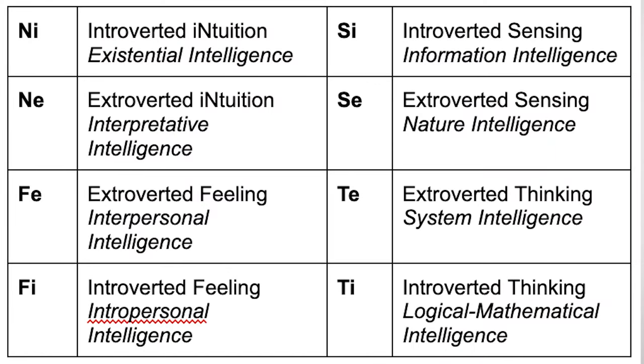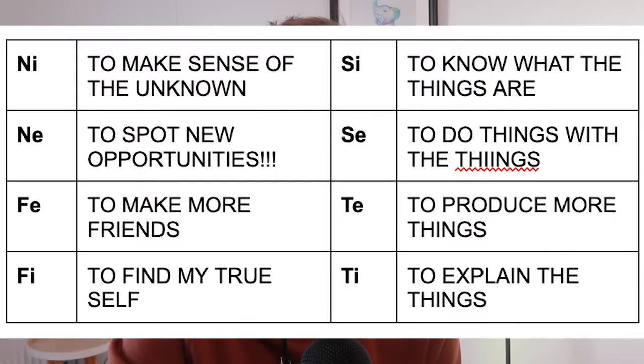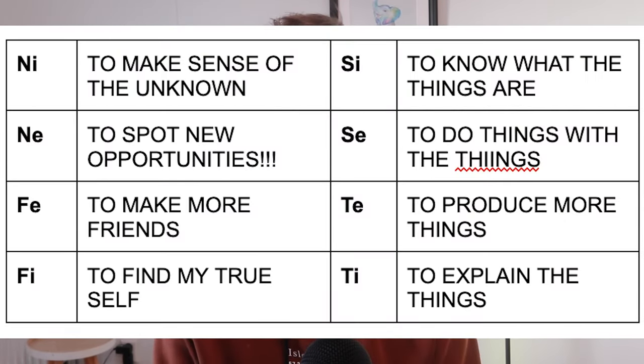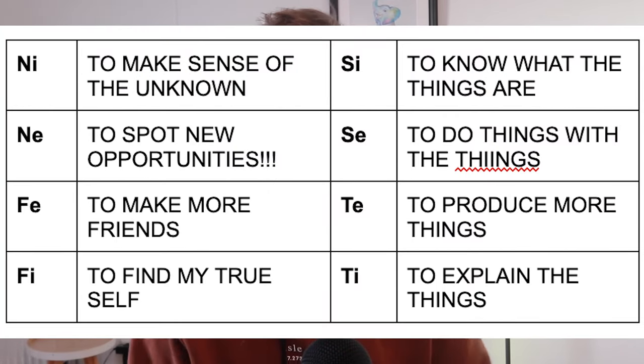You'll figure those out pretty fast because they have a pretty logical structure to them. The functions in caps: NI is to make sense of the unknown. NE is to spot new opportunities. FE is to make more friends. FI is to find my true self and what I really want in my life. SI is to know what the things are. SE is to do things with the things. TE is to produce more things. TI is to explain what the things are and why.